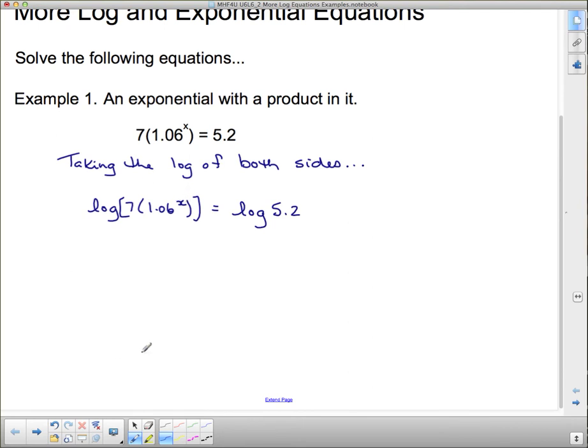Now I can't just immediately take this x and put it out front using the power law of logarithms because this 7 here is an issue. But I do have a power law that says if I have a product in the argument, then I can actually split that into two logs that are going to be added together. That's the product law of logarithms. So this is actually going to be the log of 7 plus the log of 1.06 to the x. I'm going to apply the power law at the same time and say that the x is going to go down in front there. This side is fine the way it is, it's the log of 5.2.